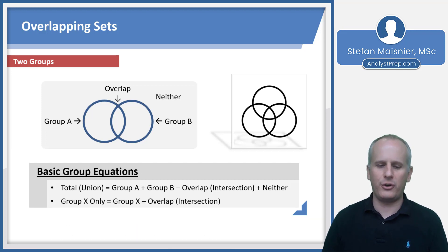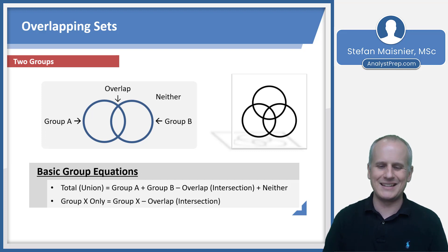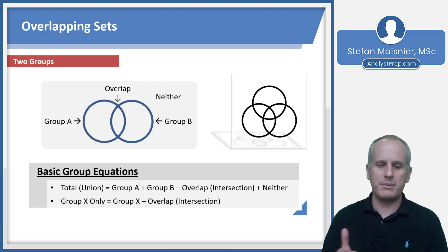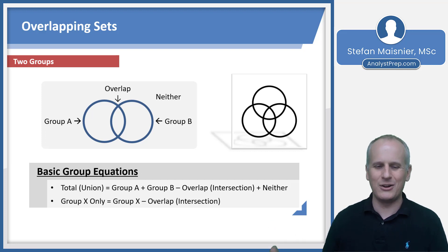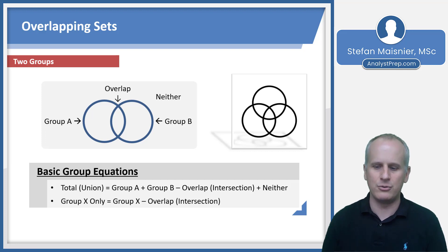You can also solve for group X alone — say group A, those that are only in group A but not in group B — by taking those in group X and subtracting out the overlap or intersection. So if I have 20 people in group A but five people in the overlap, then I know that 15 people are only in group A, because I subtract out those that were in both group A and group B.